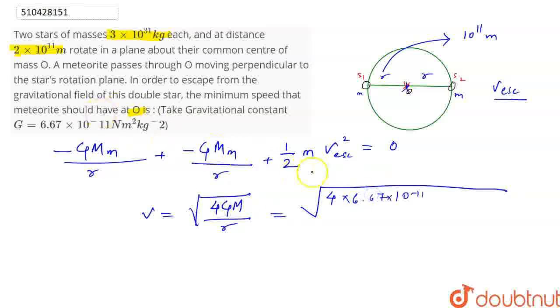Solving, 6.67 × 10^-11 into mass of star 3 × 10^31 kg divided by 10^11. Right. So now solving, we have value 2.8 × 10^5 meters per second.